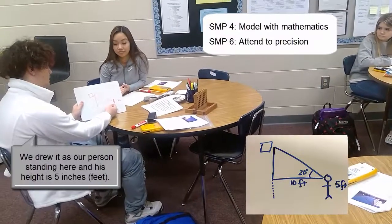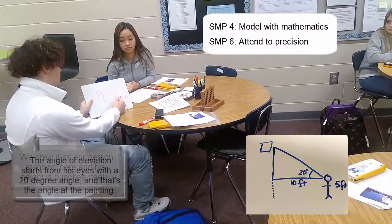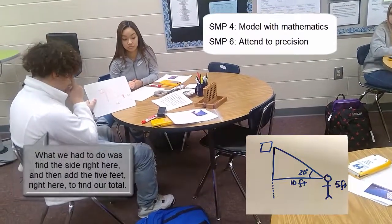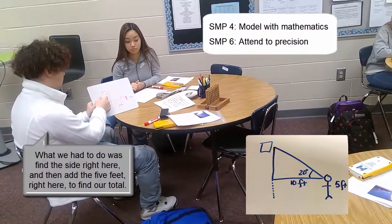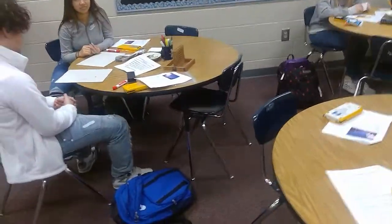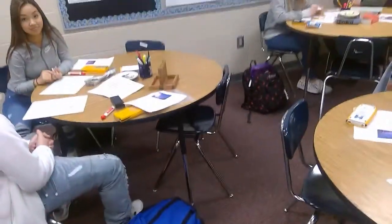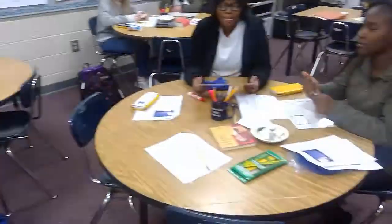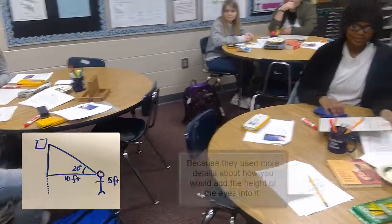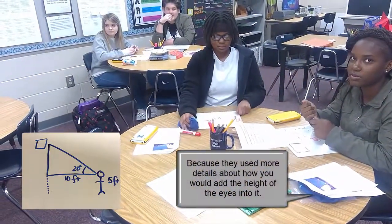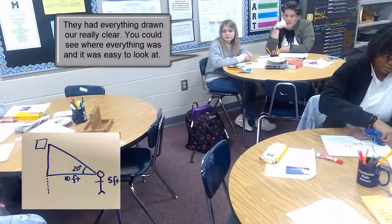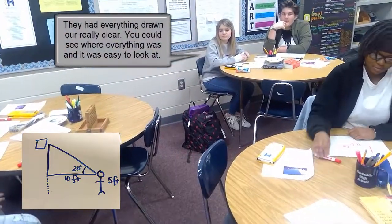We drew it as our person is sitting here, and it is higher than 5 inches. The angle of elevation starts from his eyes at the 20-degree angle. What we have to do is find the side right here and then add the 5 feet to find our answer. If you had to solve this problem, which picture would you use to solve it of your three? We would use theirs. Because they use more details of how you add the height of the eyes into it. They had it drawn out really clear, and you could see where everything was, and it's easy to look at.